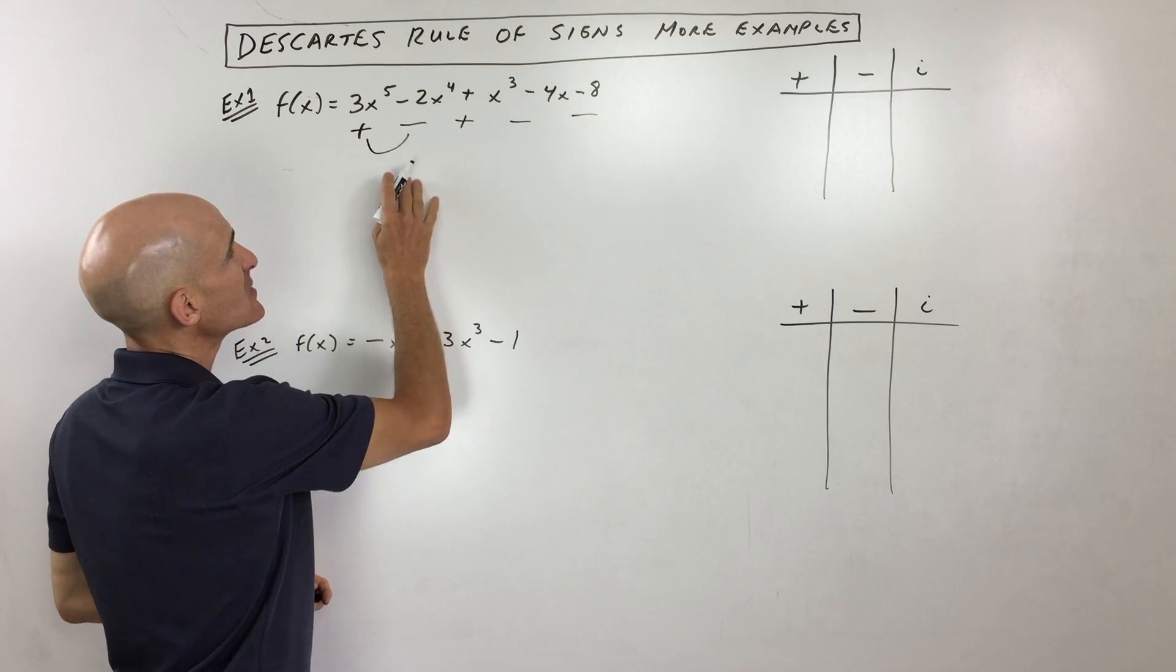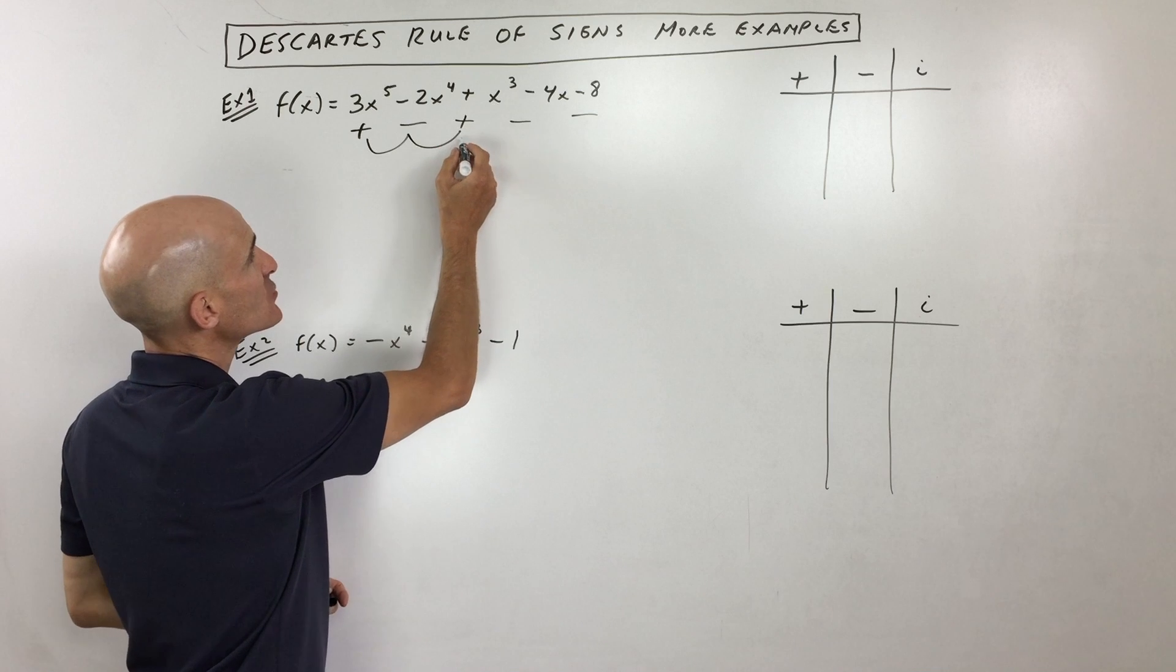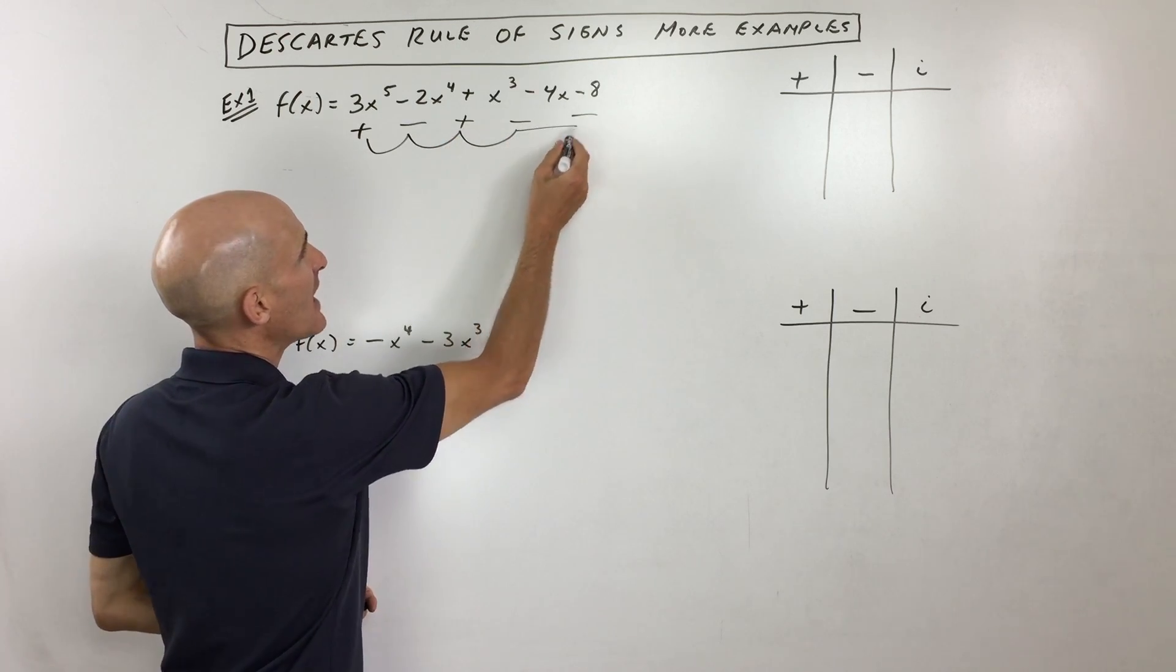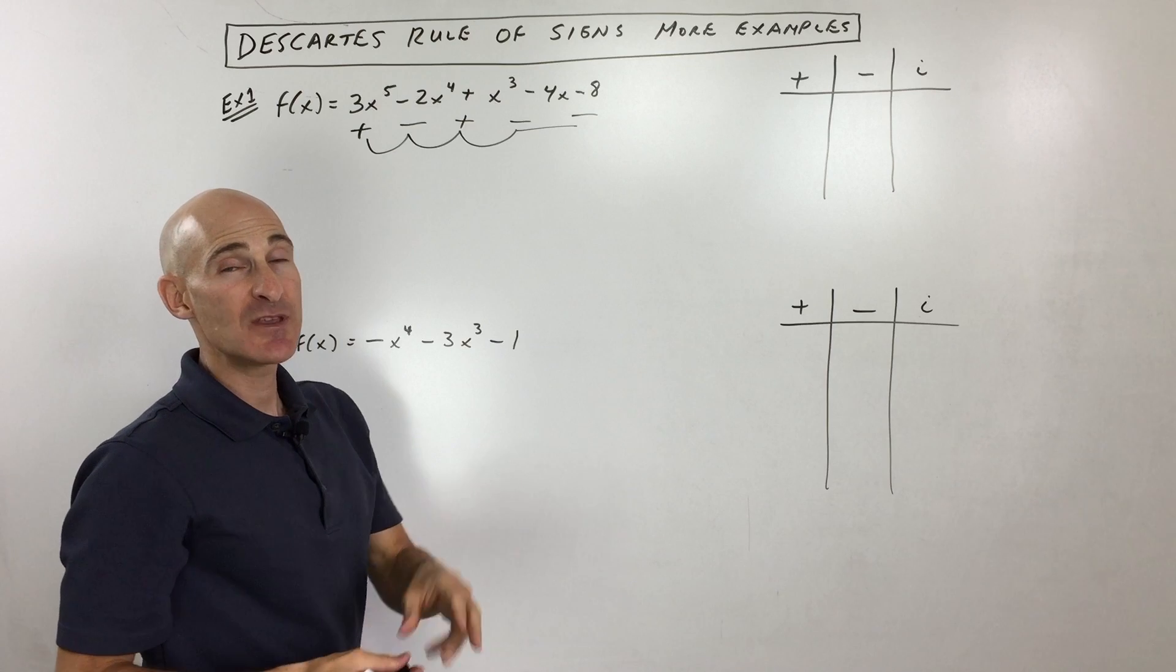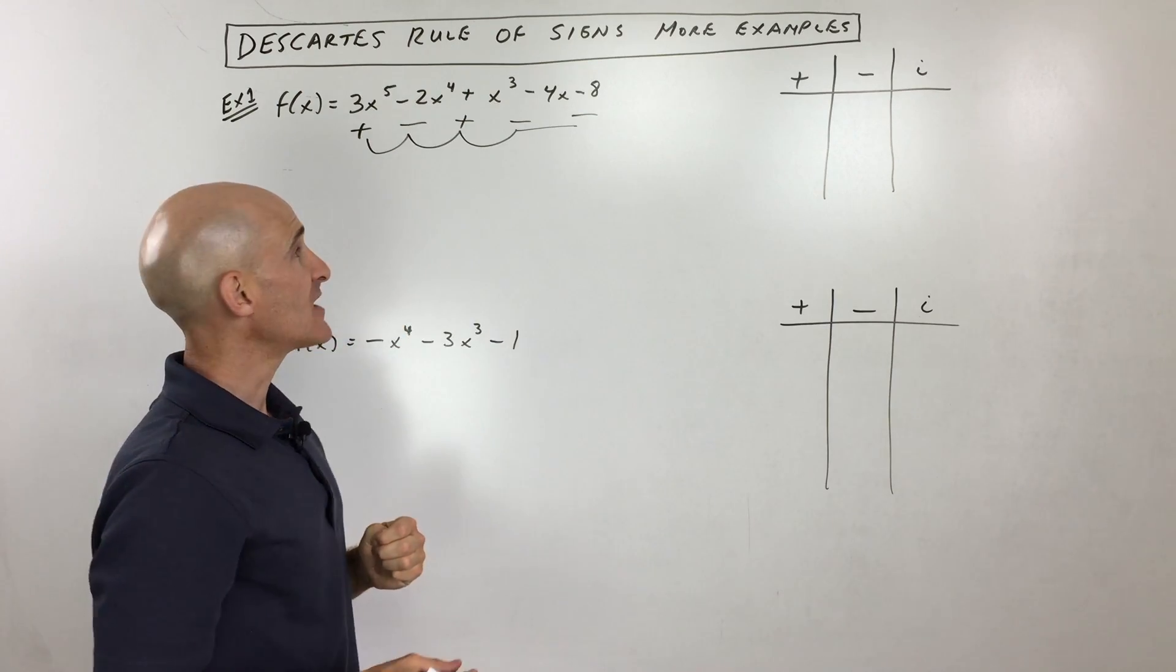So positive, negative, that's once. Negative, positive, that's twice. Positive, negative, that's a third time. Negative to negative, it doesn't change. So that means we have three sign changes.